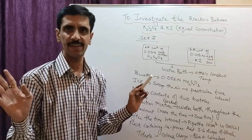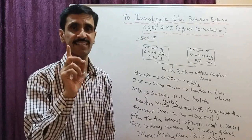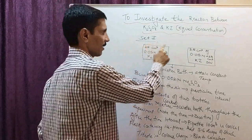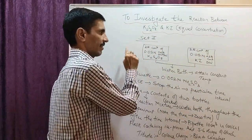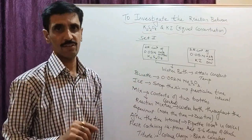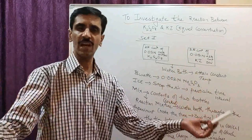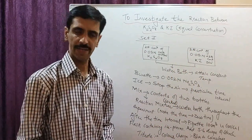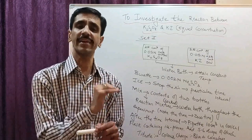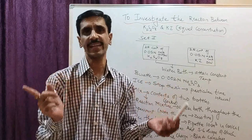Since 25 cm³ is diluted to a total of 50 cm³, that is a 2-times dilution, so the concentration becomes half of what it was in Set 1. The total volume still remains 50 cm³ in each bottle, and 100 cm³ total — same as Set 1. Only the reagent quantities in one of the bottles change. Everything else remains the same.